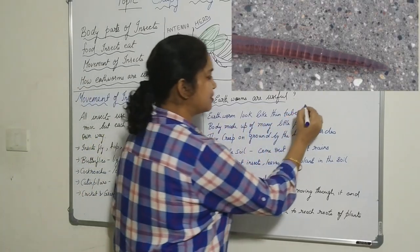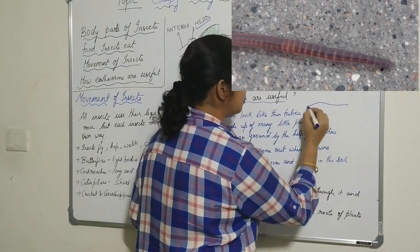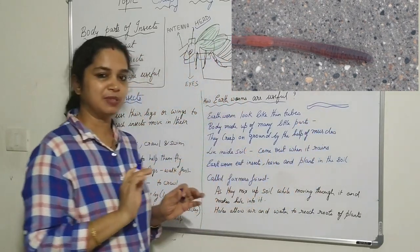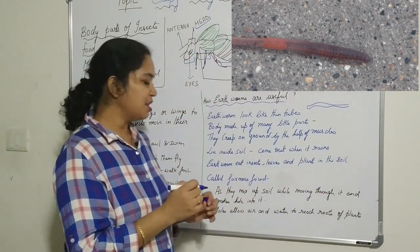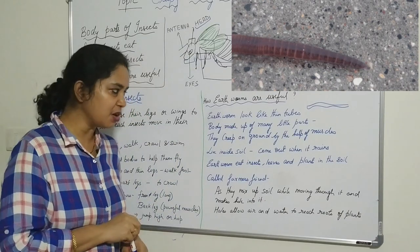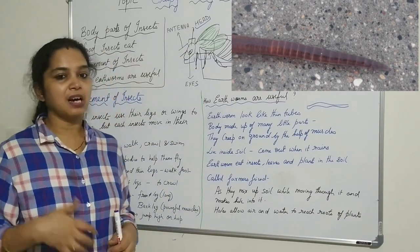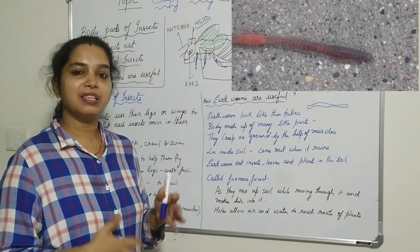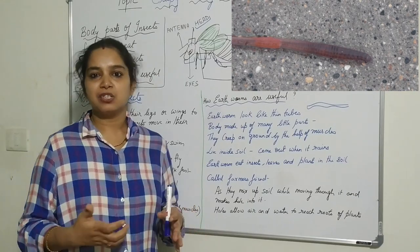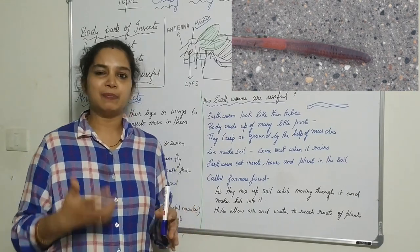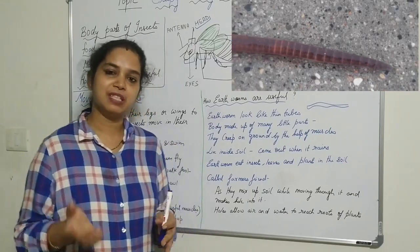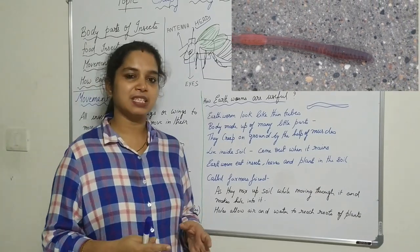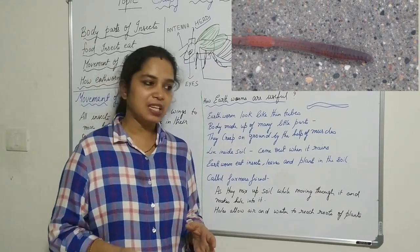Earthworms creep on the ground with the help of muscles — they do not have legs. They live inside the soil and come out when it rains. When the soil is wet, they come up to the surface to escape. At other times, they remain inside the soil.